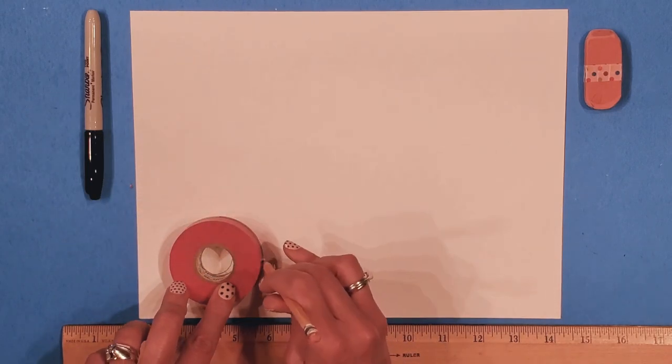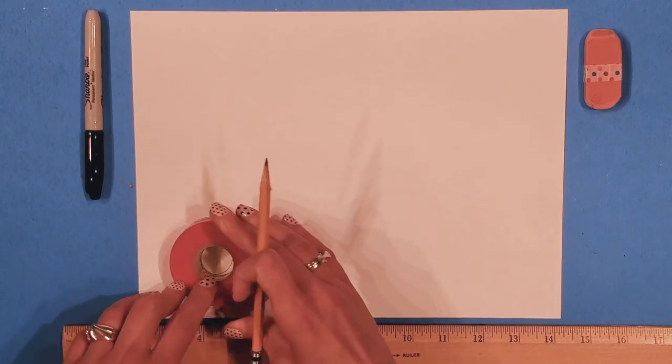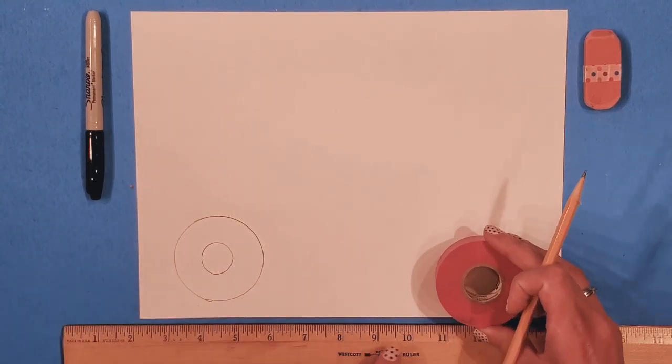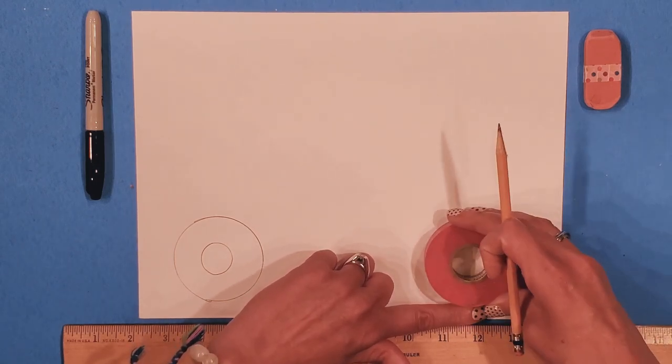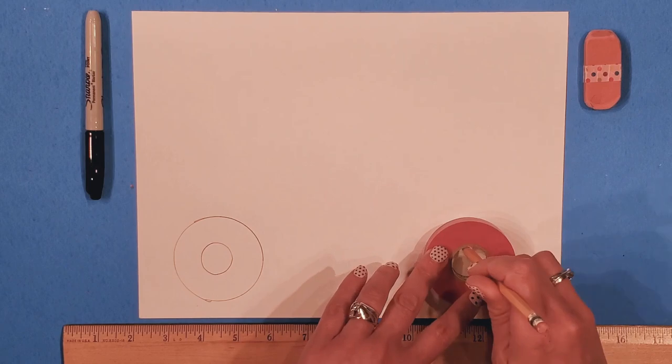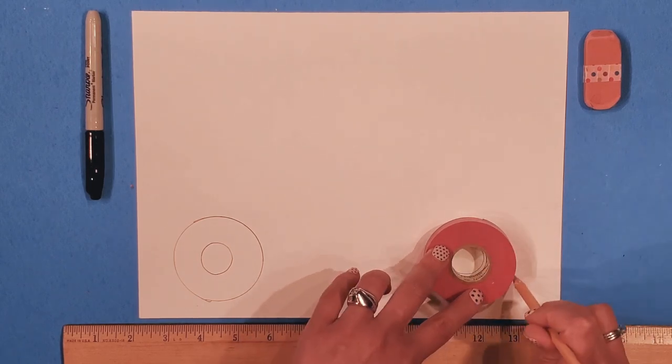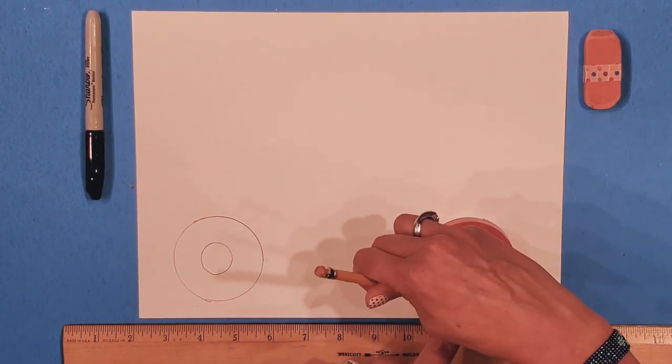I'm going to go around there. If you don't have a small roll of tape, you could use a juice glass or some other circle shape that you've got. I'm going to make another circle, again, giving it a little space so I can draw in the ground later. I'm going to trace this.